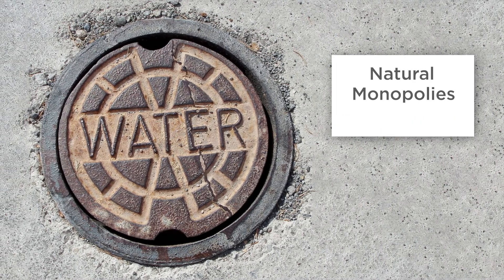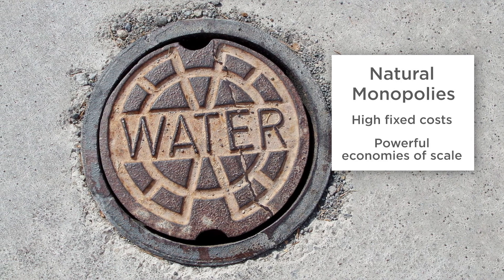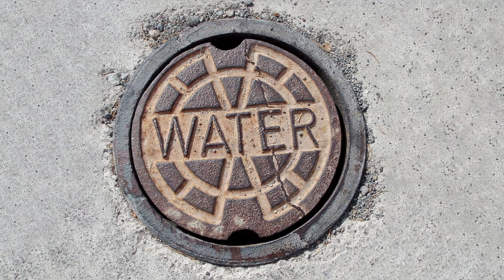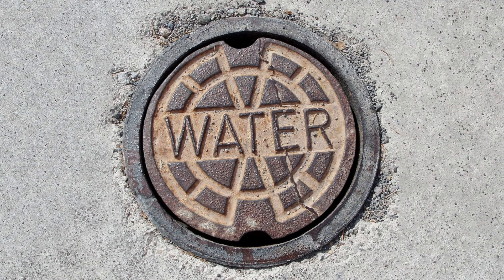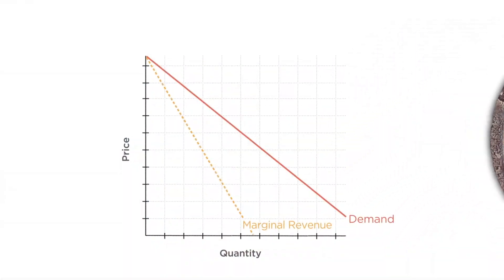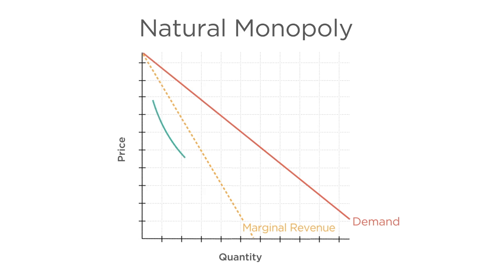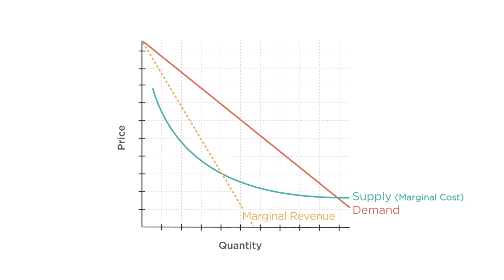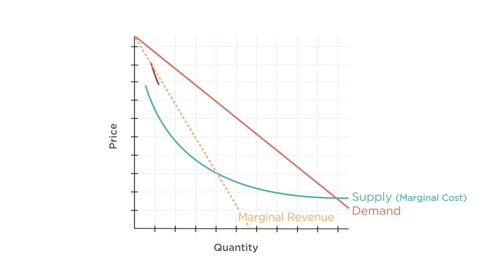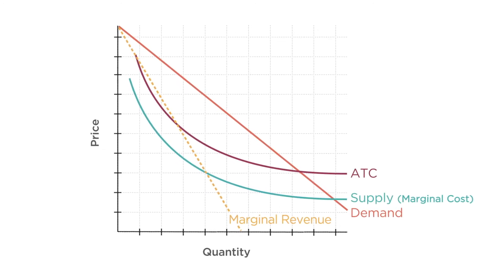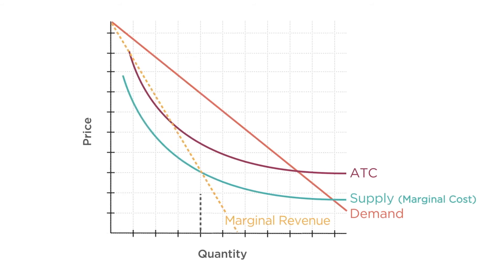Natural monopolies are those with high fixed costs and powerful economies of scale, like a water utility company. Once one firm has made that initial huge investment in pipes and facilities and is delivering water to a town, it's very difficult for a competitor to enter the market. Due to their strong economies of scale, natural monopolies face a downward-sloping supply curve — once the pipe infrastructure is in place, it costs even less to deliver water to the next house. With large initial fixed costs and strong economies of scale, a natural monopoly has an average total cost curve that is above its marginal cost curve. When allowed to produce where marginal revenue equals marginal cost, it could charge a price on the demand curve that exceeds average total cost, earning an economic profit.